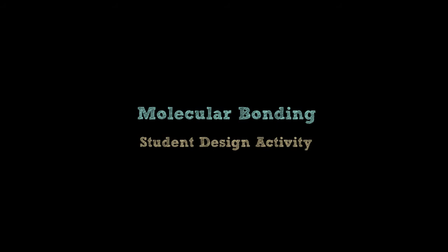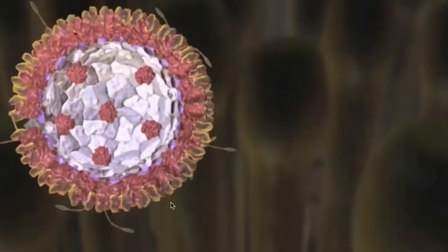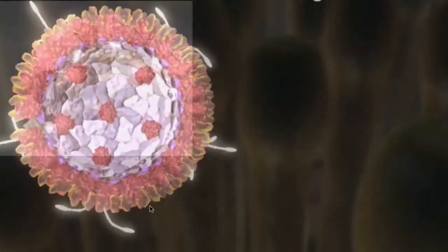Chemists and biologists model objects they cannot see with the human eye, such as molecules, viruses, and proteins, in order to gain a better understanding of their structures and how they interact with their environments.